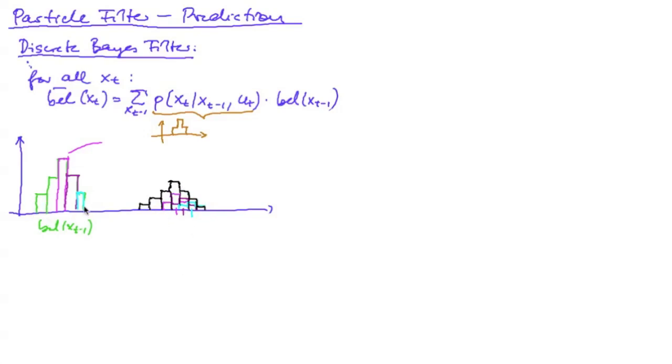So we had five discrete values here, convoluted by three values, and we obtained seven discrete values here. So the result of the convolution is a widening of our distribution,